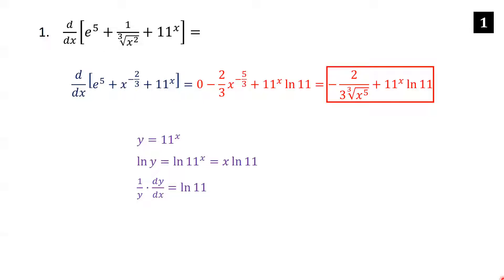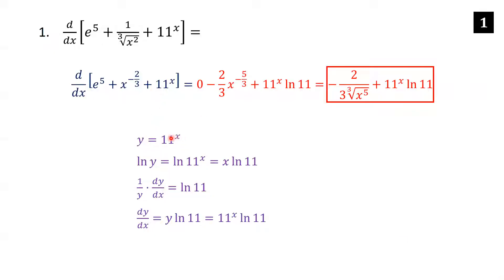Now differentiate each side. On the left, use implicit differentiation: the derivative of ln y is one over y times dy/dx by the chain rule. On the right, x times ln 11 — since ln 11 is just a constant, its derivative with respect to x is just ln 11. Multiply each side by y to get dy/dx equals y times ln 11. Finally, replace y with 11 to the x to get the derivative.